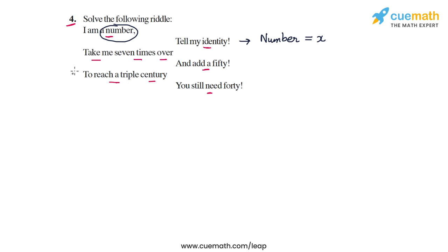Now, the riddle says take me 7 times over. So, 7 times over or 7 times of x will be 7x. And then it says and add a 50. So, 7x, you add 50 to 7x, you should get 7x plus 50.